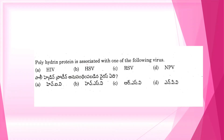Next question. Polyhedrin protein is associated with one of the following viruses. A. HIV. B. HSV. C. RSV. D. NPV.